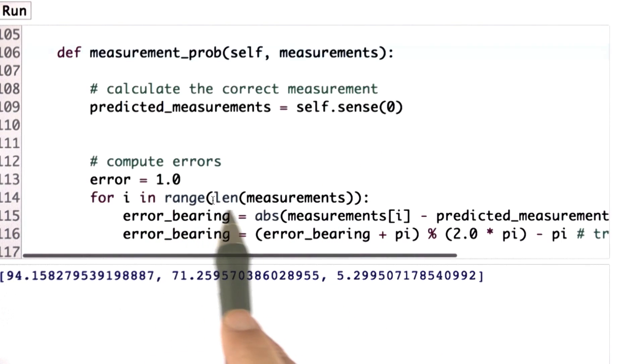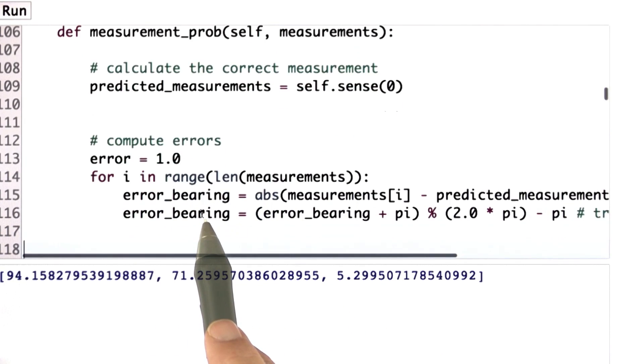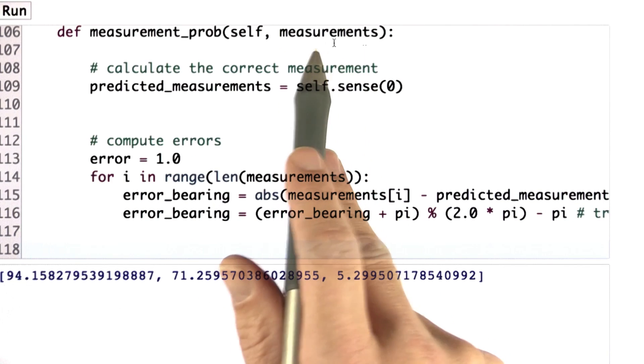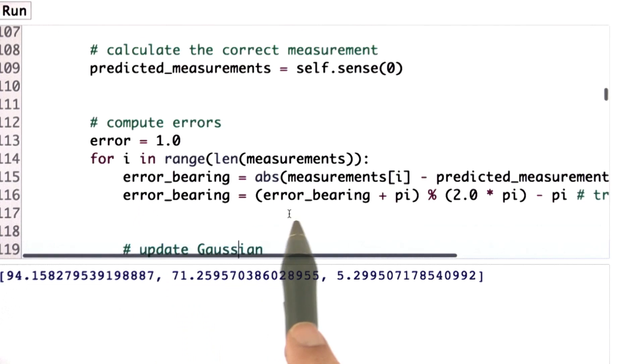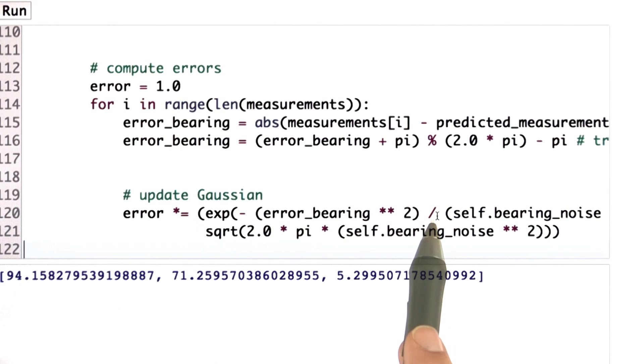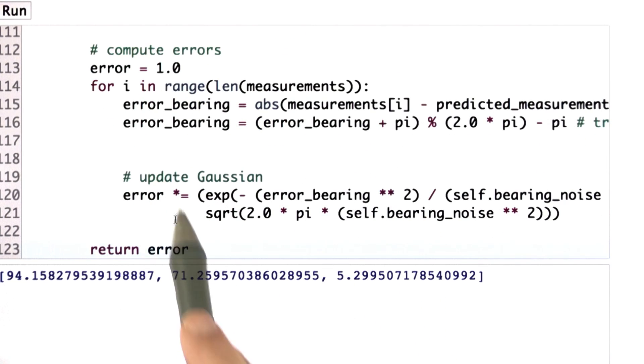And then I compute a Gaussian that measures the distance between the measurements passed into the routine and the predicted measurements computed over here. That's all happening down here. Here's my Gaussian function with the exponential. And then I return my Gaussian error. There should be no surprise here.